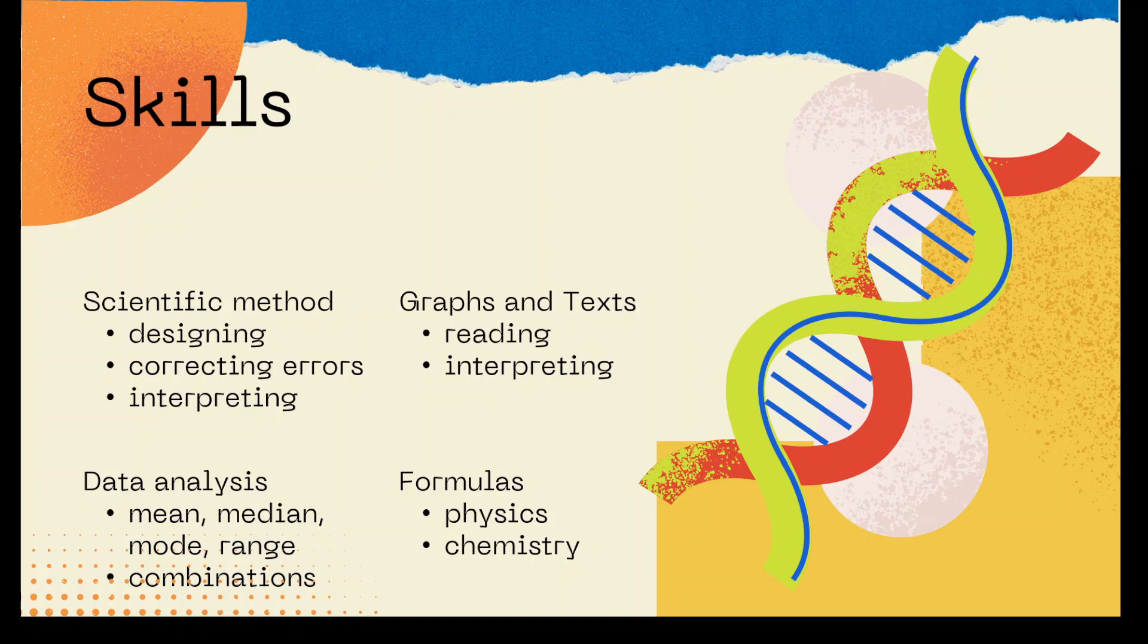You could see graphs and texts about any of those content areas, so you'd have to read and interpret those graphs and texts. In data analysis, you could see mean, median, mode, and range. You could also see combinations and permutations as well. You're going to see formulas you might have to use with physics or chemistry content.